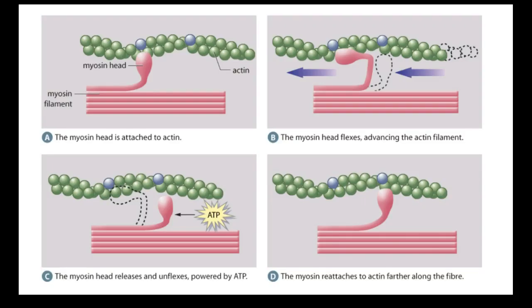This is another diagram of what we're seeing. We have our actin and our myosin — the myosin head attaches to the actin, it flexes, causing it to pull in one direction. This diagram is just going in the opposite direction.